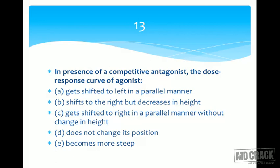Next question on general pharmacology: in the presence of a competitive antagonist, the dose-response curve of the agonist — A) gets shifted to the left in a parallel manner, B) shifts to the right but decreases in height, C) gets shifted to the right in a parallel manner without change in height, D) does not change its position and becomes more steep. Address competitive antagonism conceptually before getting confused by the long option sentences.